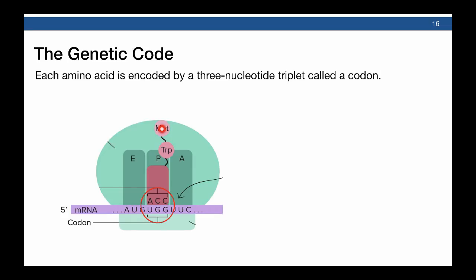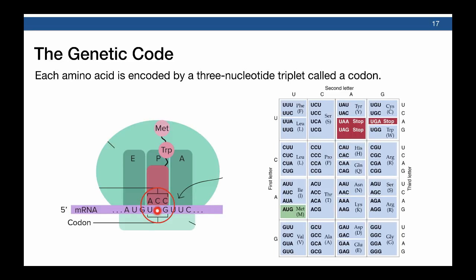Each amino acid is encoded by a specific three-letter nucleotide triplet called a codon. Codons are matched to a specific anticodon as part of the tRNA. Each codon in messenger RNA specifies an amino acid. There are 20 amino acids encoded by the various codon combinations, and these combinations are known as the genetic code. In addition to specifying amino acids, there are codons that start and stop the process of translation.